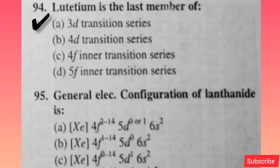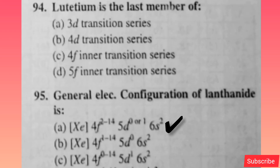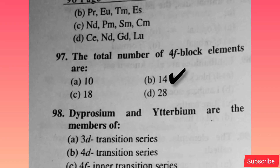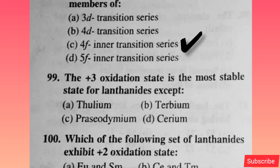Lutetium is the last member of — option C is correct. General electronic configuration of lanthanide is — option A is correct. The elements belonging to the 4f inner transition series are — option D is correct. The total number of 4f block elements is — option B is correct.